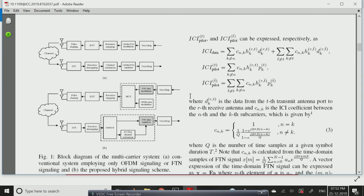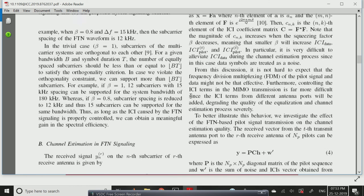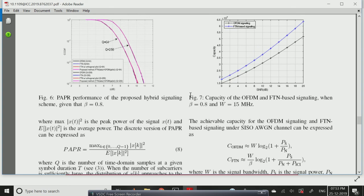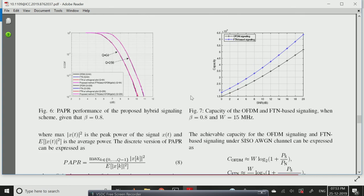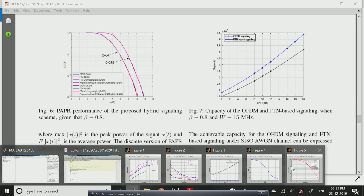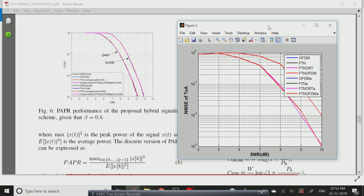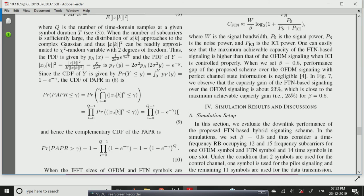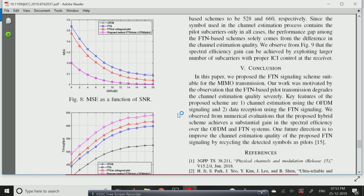In the NFT technique we can calculate some results. These are the results we can show in the proposed hybrid signaling scheme. Figure 6 is PAPR performance, that is peak average power ratio technique with beta 0.8 factor. And figure 7 is the capacity of OFDM and FTN based signaling with the same scheme. Here this is the figure 6 graph with 0.8 factor.